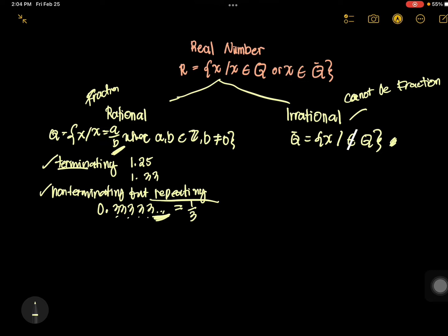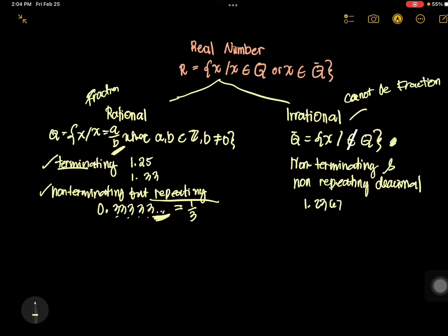For irrational numbers, the number must be non-terminating, meaning it does not end, and non-repeating, meaning there is no pattern at all. For example, 1.2367898213 — considering that this is non-terminating and non-repeating, there is no pattern in the sequence. If it's like this, it is under irrational.